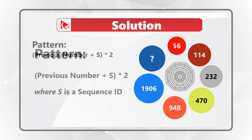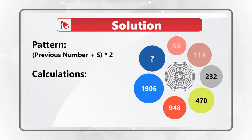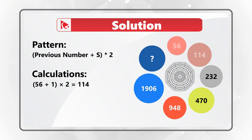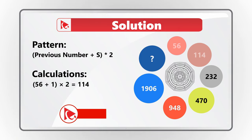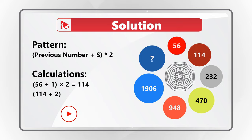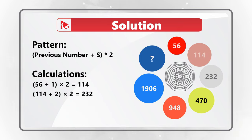The pattern here is: previous number plus the sequence number, multiplied by 2 — and you have to add the sequence number to the previous number before doing multiplication. For example, the first number is 56. If we add 1 to 56 (which is the sequence number), then multiply by 2, 57 multiplied by 2 is 114. Doing the same to 114: 114 plus 2, multiplied by 2, equals 116 multiplied by 2, which is 232.